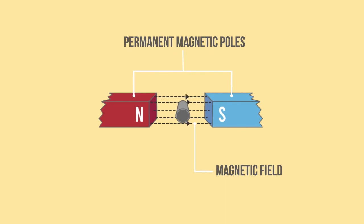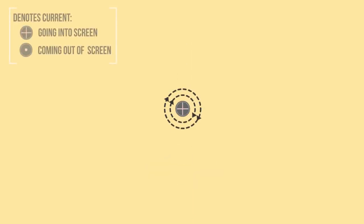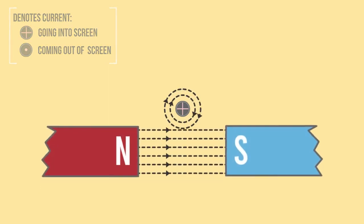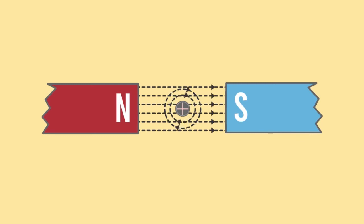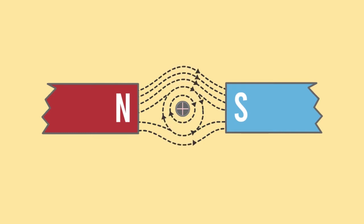The magnetic field produced by the current-carrying conductor — the wire — and the magnetic field between the permanent magnetic poles interact. The first scenario we will consider is where the conventional current flow is away from the viewer. The magnetic flux lines generated by the wire are clockwise in orientation. When the wire is placed in the middle of the magnetic field between permanent magnetic poles, the two magnetic fields interact. The field is strengthened just above the wire and weakened just below.